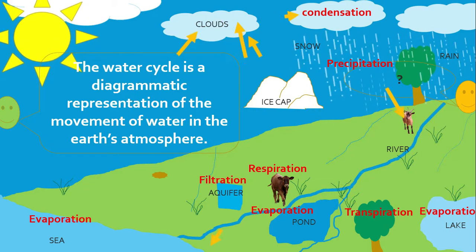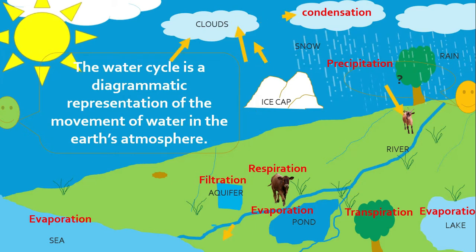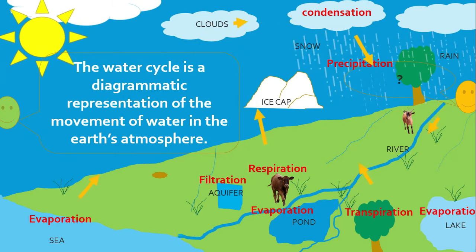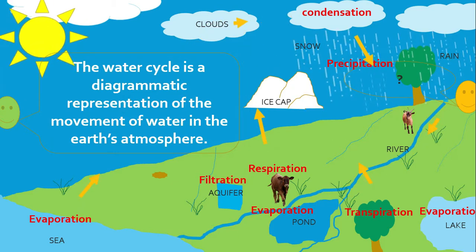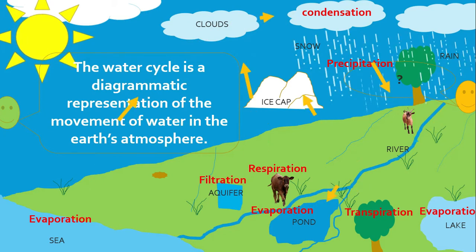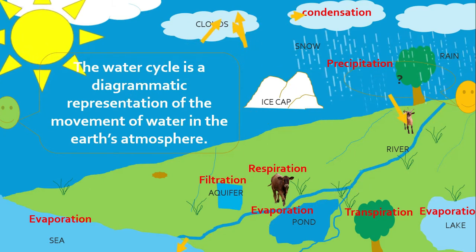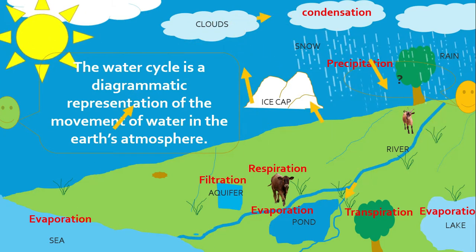Water returns to the Earth through precipitation, it runs off, and some seeps into the soil. Plants use this water and later it is returned to the sky by transpiration.